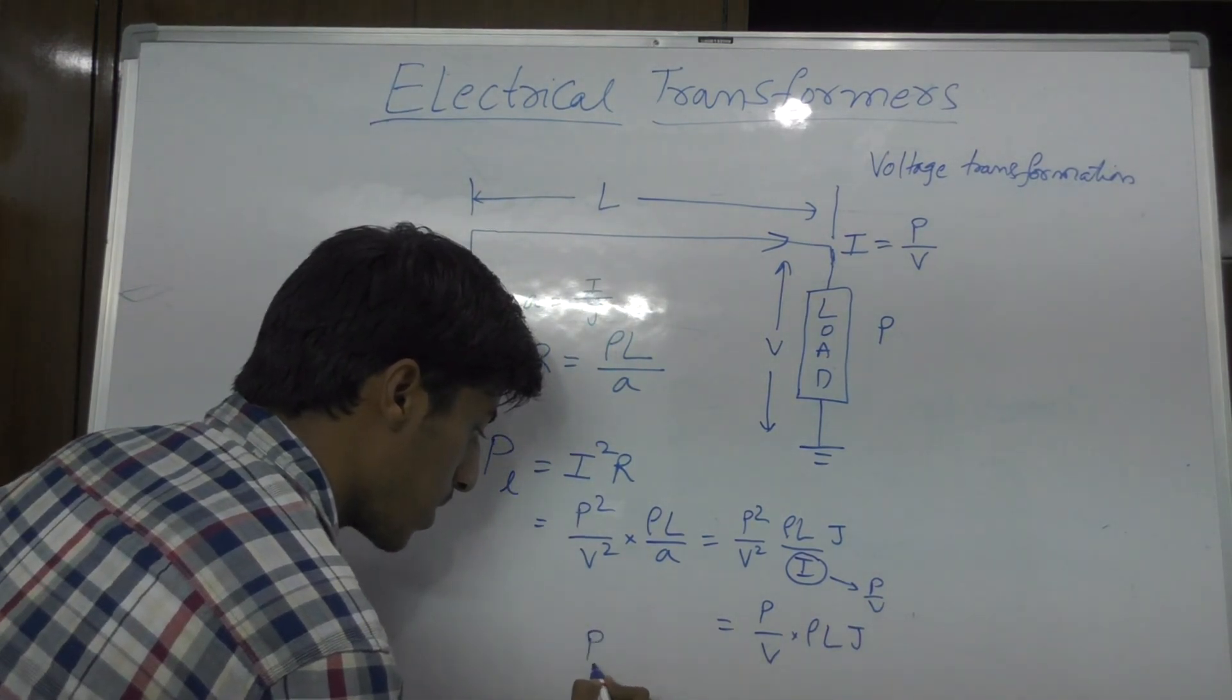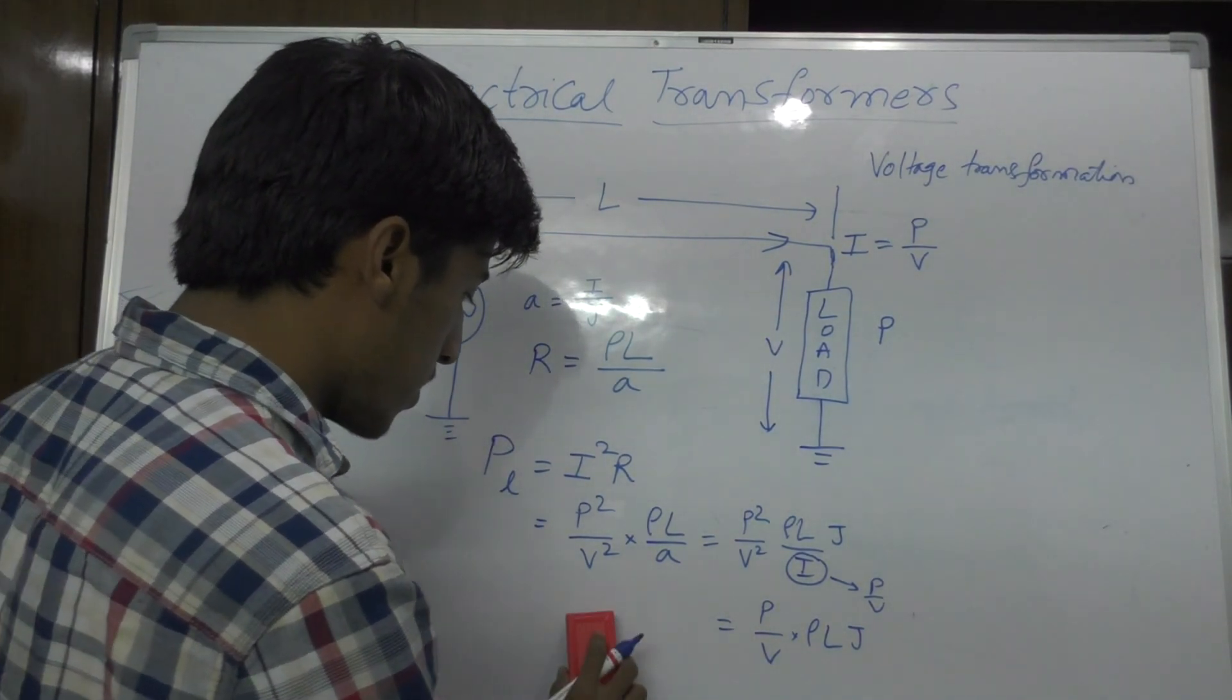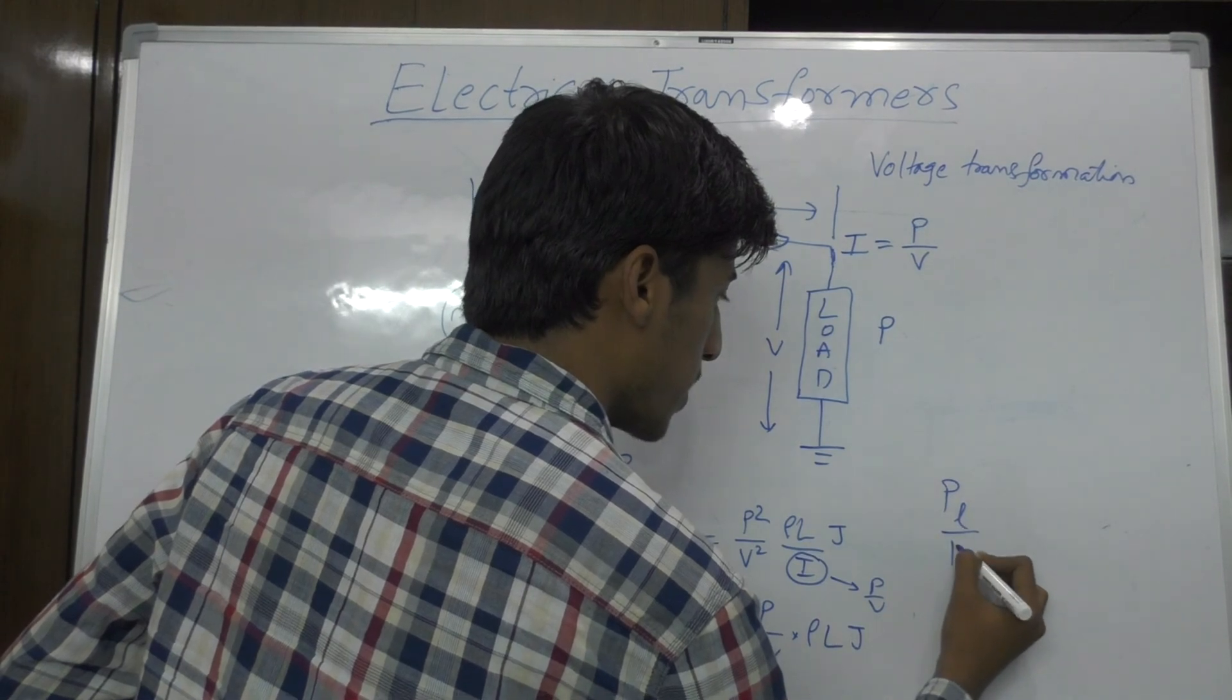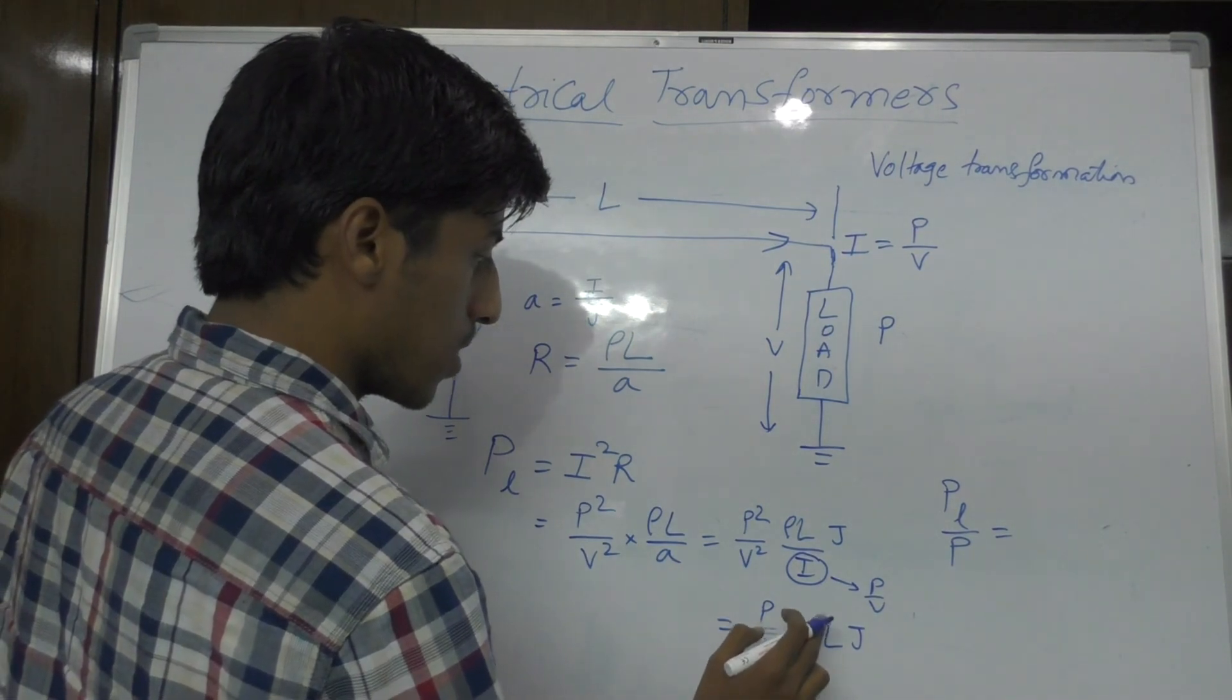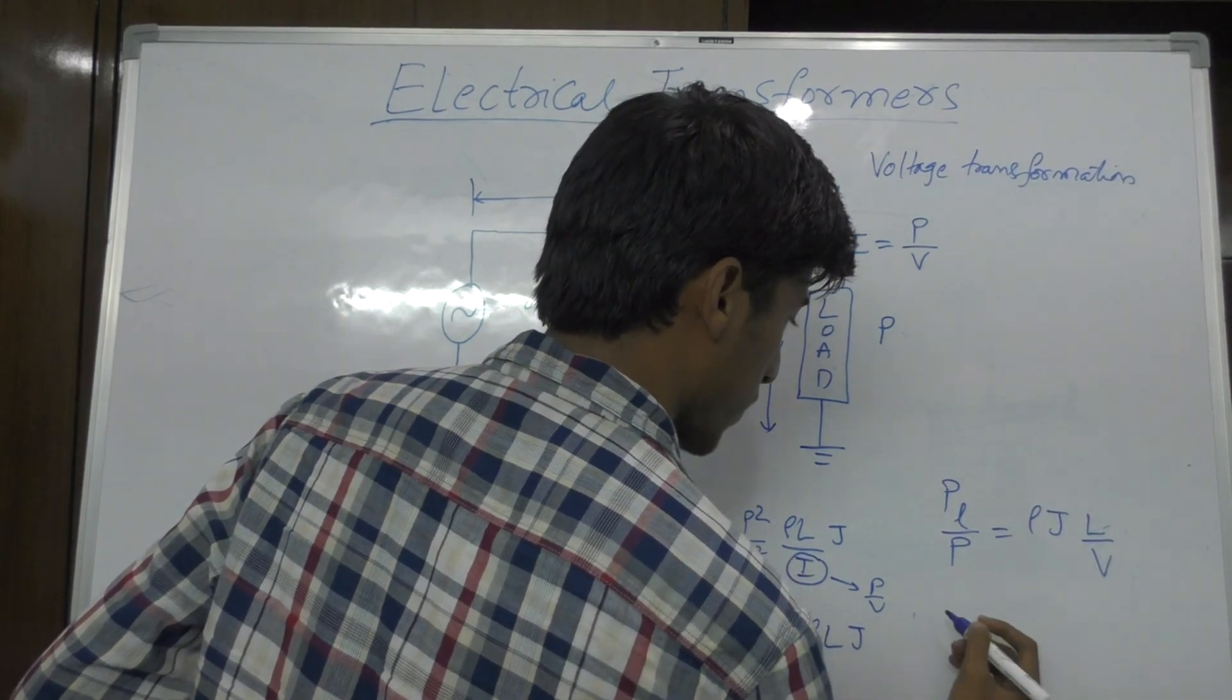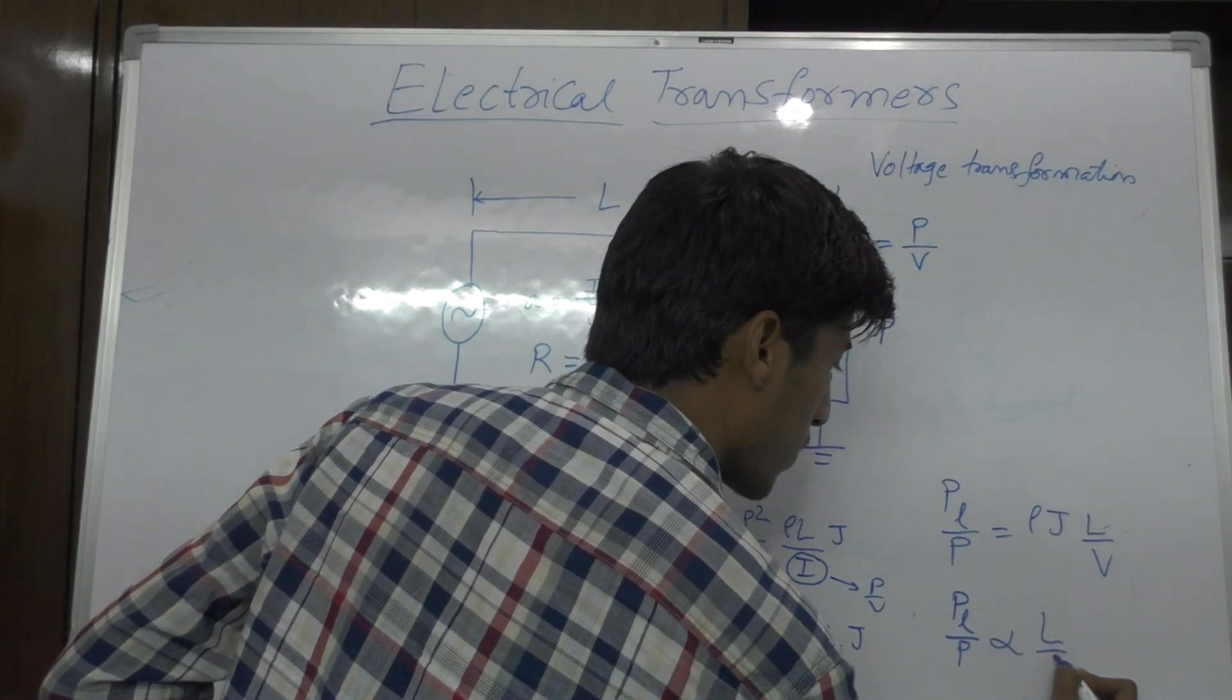Now finally, PL by P is equal to rho J into L by V. So the conclusion is PL by P is proportional to L by V.